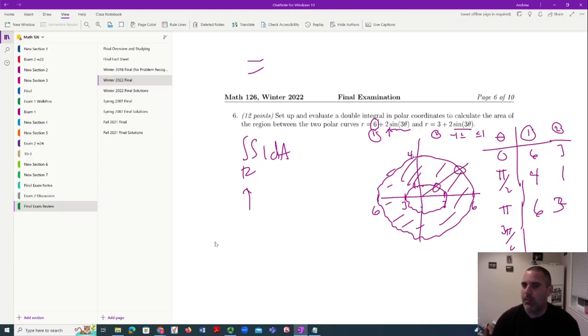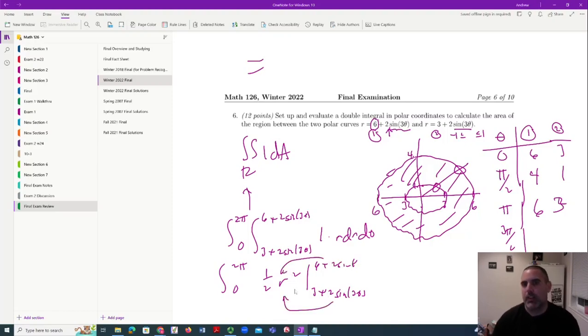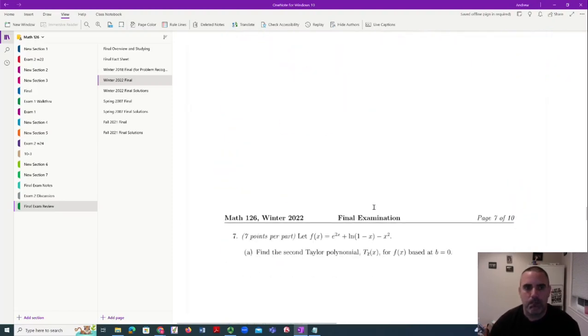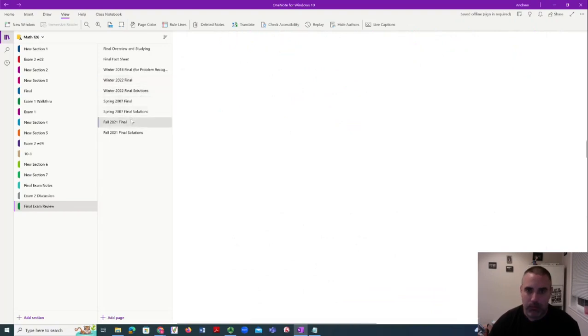Now, once we have that, we have a sense of what's going on. We need to go all the way around. And the smaller one is 3 plus 2 sine of 3θ. And the bigger one is 6 plus 2 sine of 3θ. And it's 1 r dr dθ. And then you start integrating. There's no way around this part. One half r² from 3 plus... So that was probably a little bit of a challenge for people to think through. Plug this in. Plug this in. Expand. Integrate. That's how that goes.